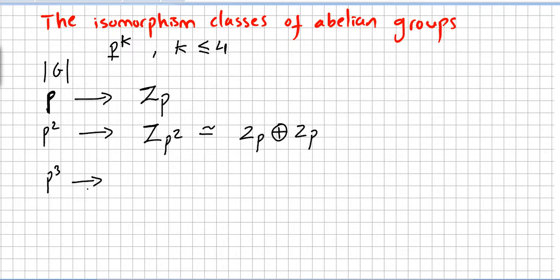What about p cubed? Well, that will be isomorphic to Z_{p^3}, and it's also isomorphic to Z_{p^2} direct sum Z_p, or Z_p direct sum Z_p direct sum Z_p. Let's do it till 4.